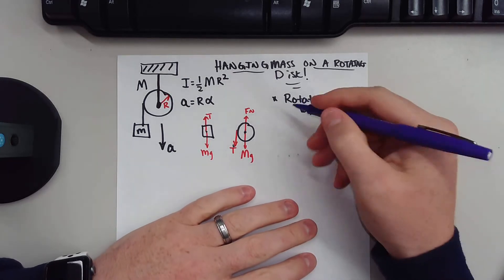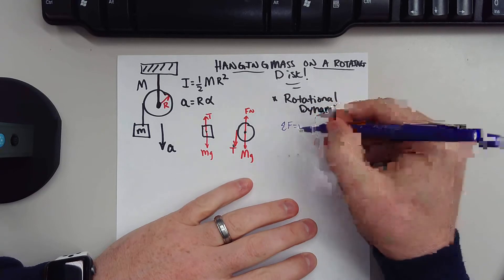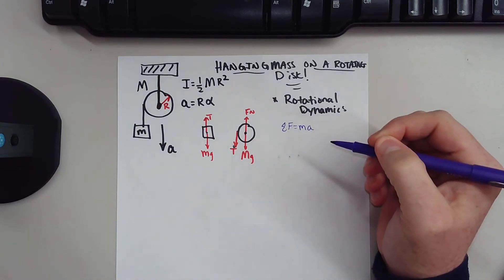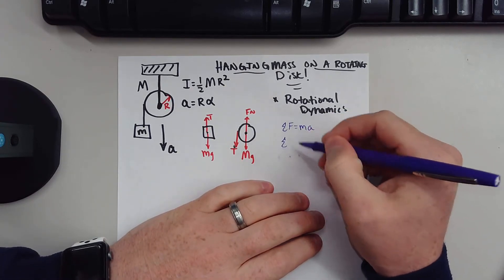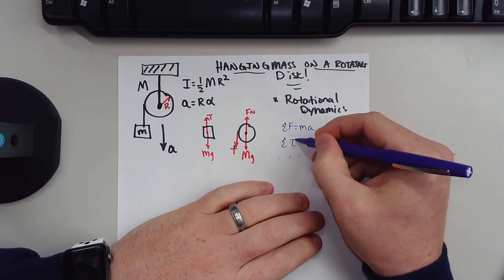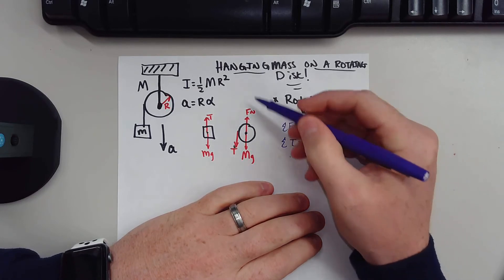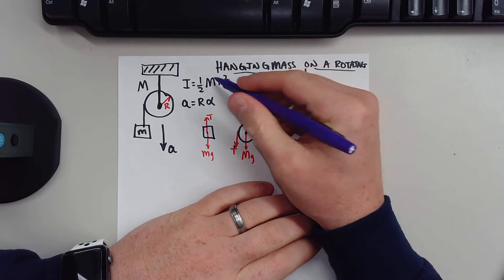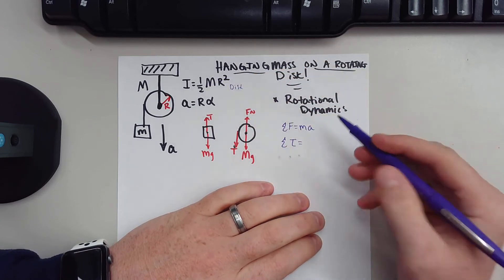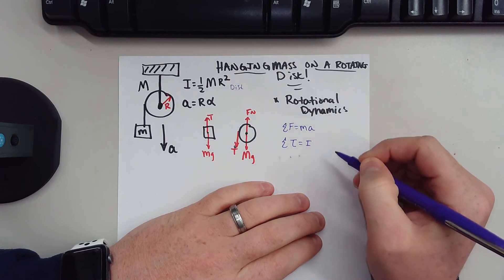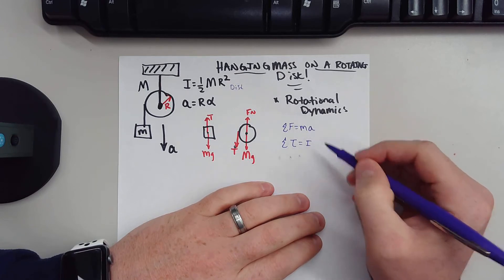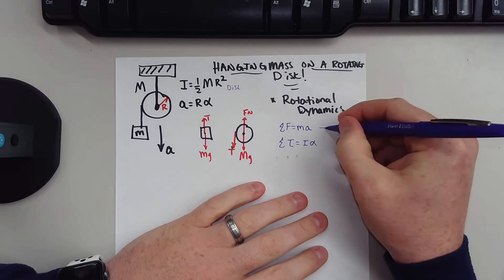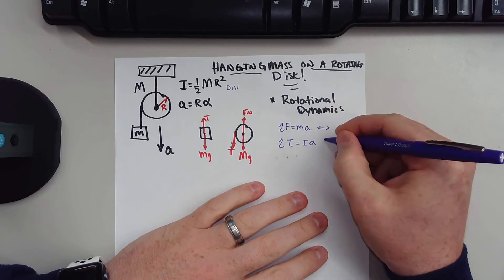Newton's second law is simply the summation of all forces equal to mass times acceleration. But there is another law — Newton's second law of rotation — which involves torque rather than force. For angular motion, we don't use mass; we use the moment of inertia, and the moment of inertia for a disk is one-half MR squared. And for angular motion, we don't use translational acceleration; we use angular acceleration, which is denoted with alpha.